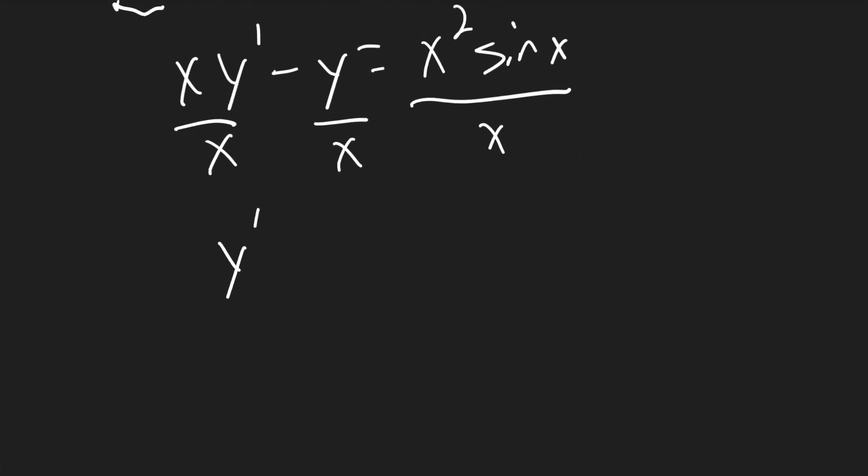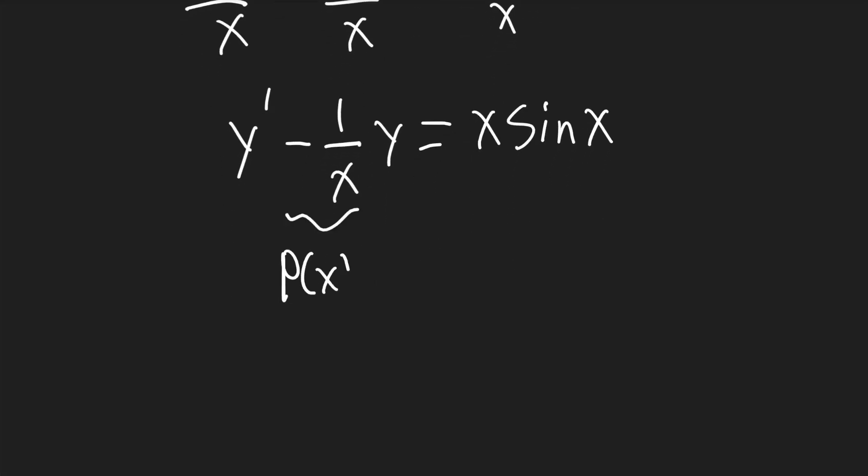Our new equation will be y prime minus 1 over x times y is equal to x times sine of x. So our new p of x term is going to be negative 1 over x.